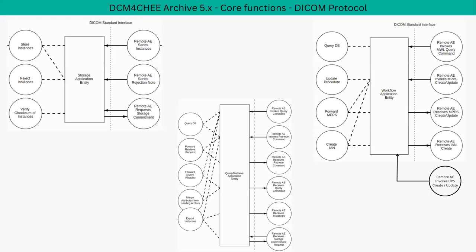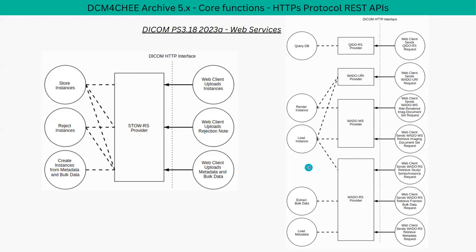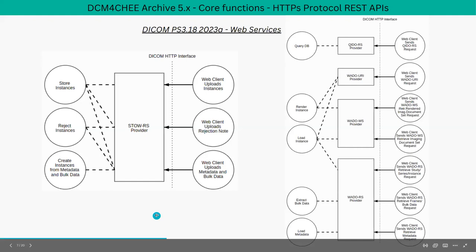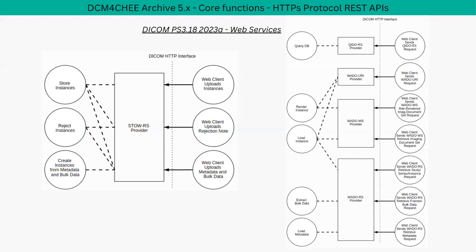The workflow application entity handles querying and creation or updates of modality worklists, modality performed procedure steps, and unified procedure steps. The core functions with respect to HTTPS protocol relate to its RESTful services. The archive has five main RESTful service providers, essentially similar in workings to the application entities — external systems can store or query/retrieve instances over the web using REST APIs. This is done in compliance with DICOM Part 18, which defines these various web services.